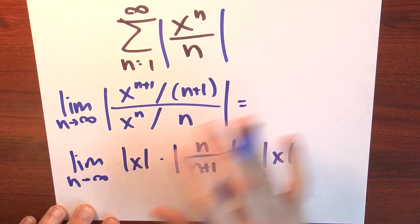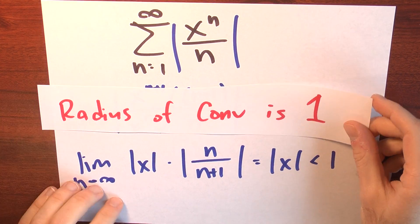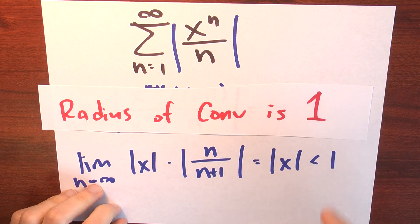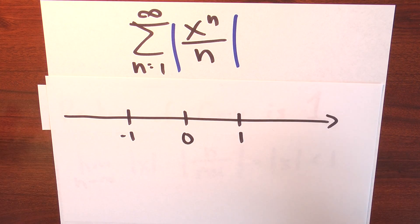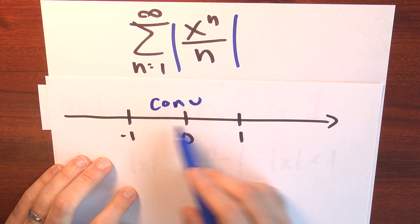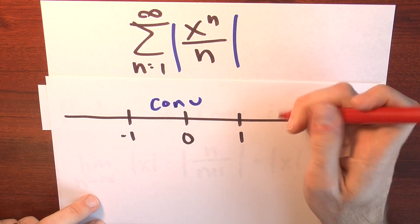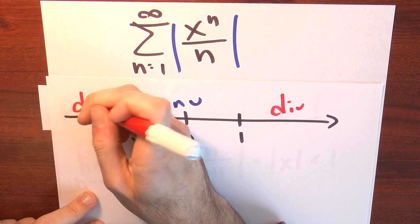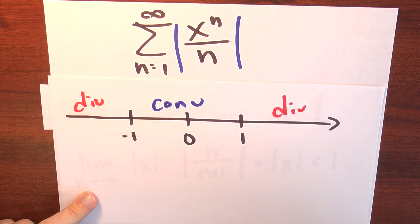So this series converges absolutely when the absolute value of x is less than 1, and it diverges when the absolute value of x is bigger than 1. The radius of convergence is 1. Plotting on the number line, it converges when x is between minus 1 and 1, and diverges outside that range. What about the endpoints?